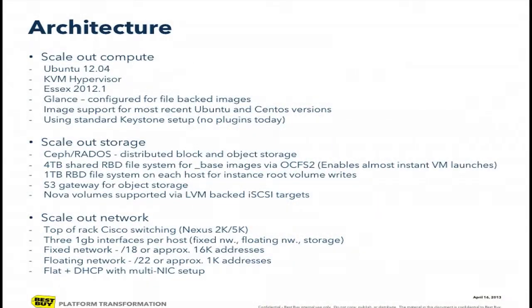For scale-out network, our network team had put in a good core of Nexus gear — Nexus 5K, 7K, 2K. We purchased 2K fiber extenders and use three 1Gb interfaces per host: one for fixed network, one for the floating network, and one for storage, so all storage reads and writes go over a different interface. Our sizing for the internal space is a slash 18 for fixed and a slash 22 for the floating, with a quota around how many addresses each team can have. Right now we're running the multi-NIC flat DHCP world, but we know that won't get us full scalability, so we're looking into Grizzly.